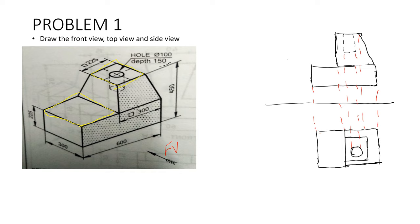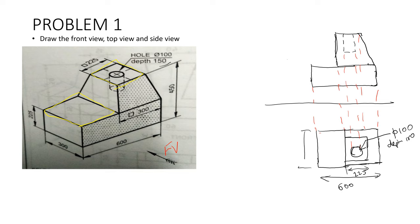We have to mention all the overall dimensions. The overall dimension is 600. We have the square block distance — the upper square block distance is about 225. And then the hole diameter is indicated. The hole diameter is 100, and the depth we have to mention is 150. The overall length is 600. Obviously, we need to mention this length, that is 300 mm.